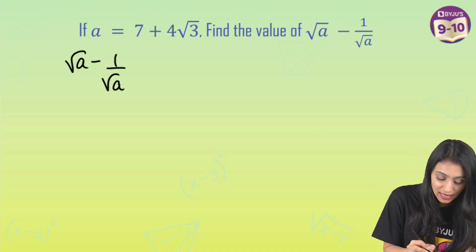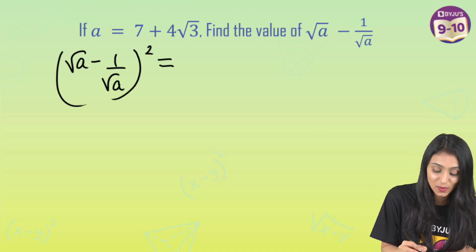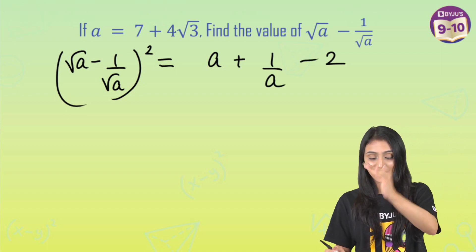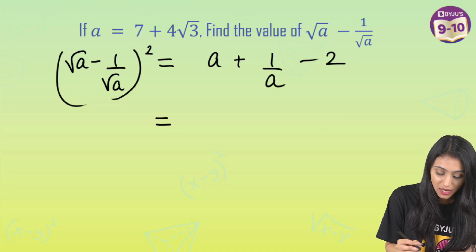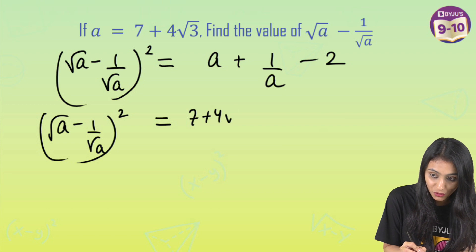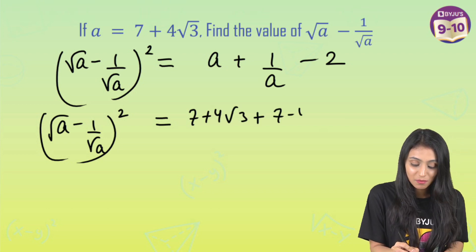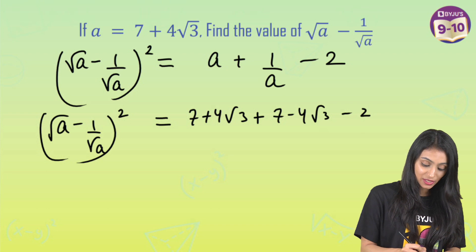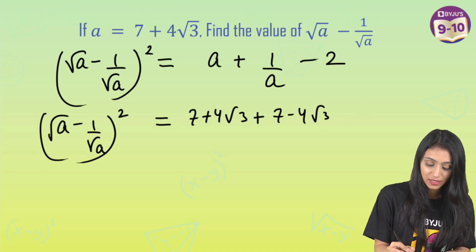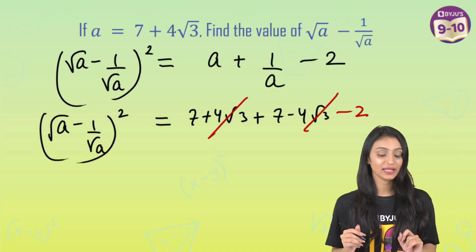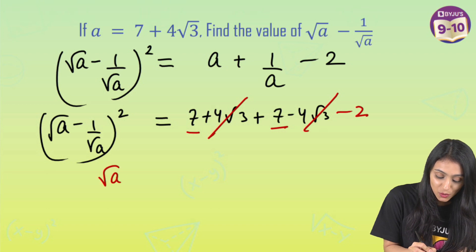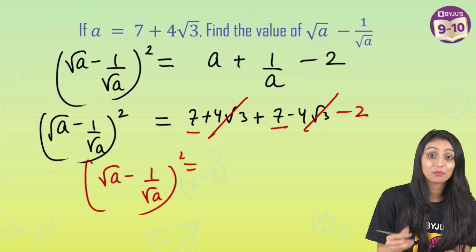So 1 by a equals 7 minus 4 root 3. Now we have both a and 1 by a. We substitute into (root a minus 1 by root a) squared equals a plus 1 by a minus 2. So that's (7 plus 4 root 3) plus (7 minus 4 root 3) minus 2. The plus 4 root 3 and minus 4 root 3 cancel out, leaving 7 plus 7 minus 2.